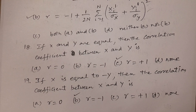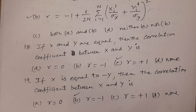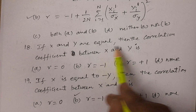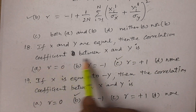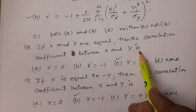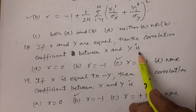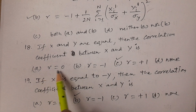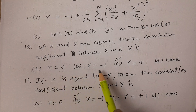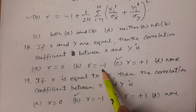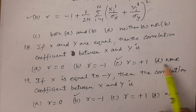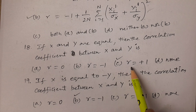Question number eighteen: if x and y are equal, then the correlation coefficient between x and y. We have already discussed this: if R equals plus one, then x and y are equal. Options are R equals zero, R equals minus one, R equals plus one, or none. The answer is option C, r equals plus one.